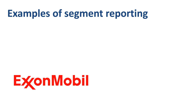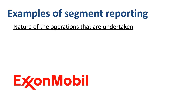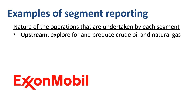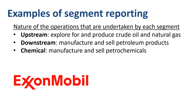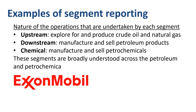From the ExxonMobil discussion of operating segments, we learned something about how to best define the operating segments of the business that are reported separately. The factors used to identify these reportable segments are based on the nature of the operations undertaken by each segment. The upstream segment explores for and produces crude oil and natural gas. The downstream segment manufactures and sells petroleum products. The chemical segment manufactures and sells petrochemicals. These segments are broadly understood across the petroleum and petrochemical industries, allowing investors to compare divisional performance between competitors in the same industry.